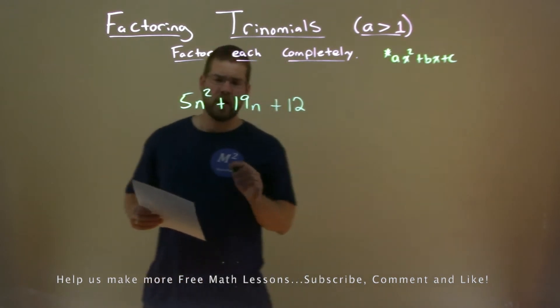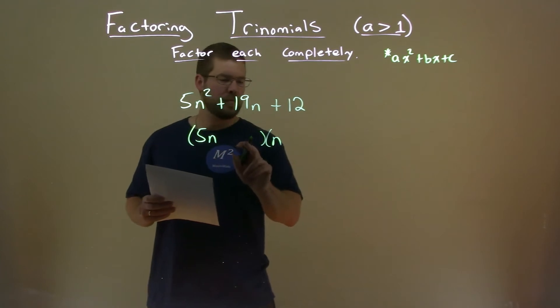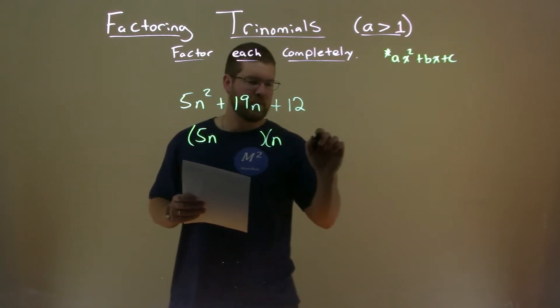Our a value is prime, meaning we know it's going to be in some form of 5n, in parentheses, plus something, then times n plus something else, or minus.